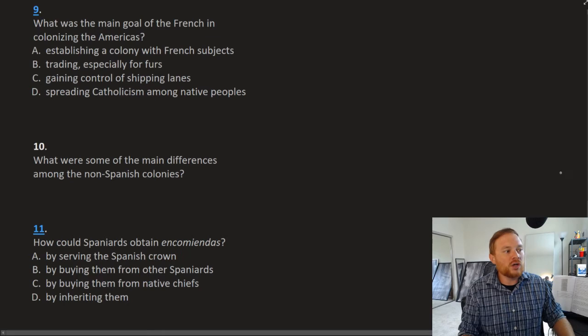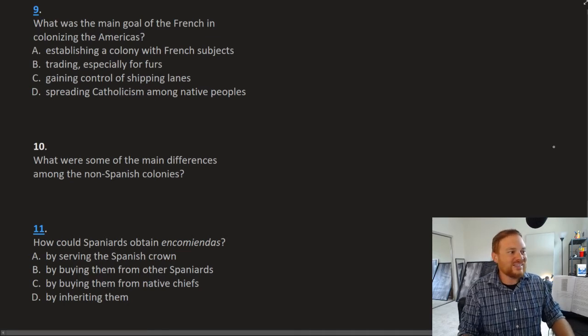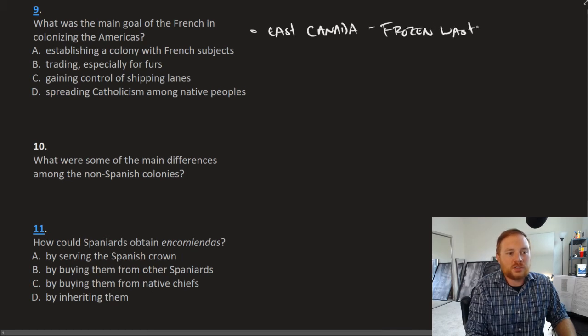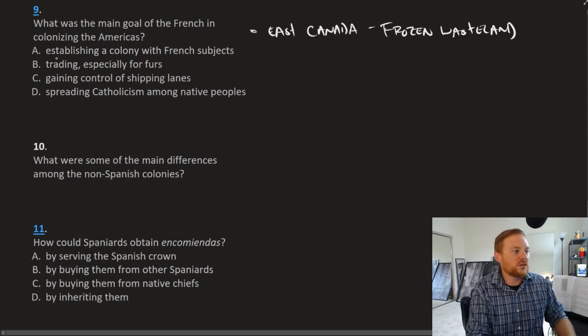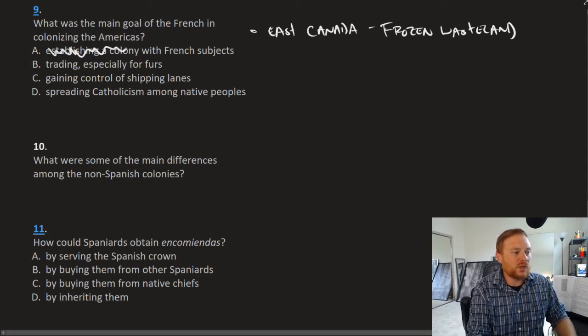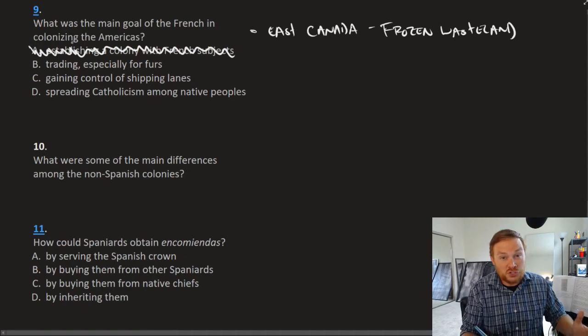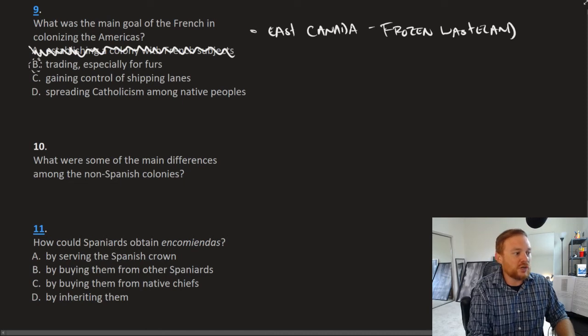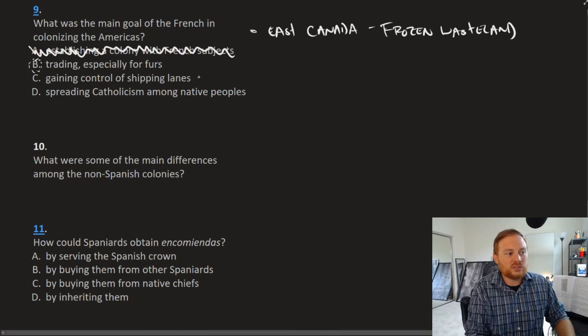Question number nine, what was the main goal of the French in colonizing the Americas? The French ended up in what was today Eastern Canada, also called a frozen wasteland, according to the French. So not a lot of people wanted to move there. Question A, nope, not the right answer. Because it was a frozen wasteland, you did not have a large number of French settlers ending up there. Trading, especially for furs, that's potentially a correct answer.